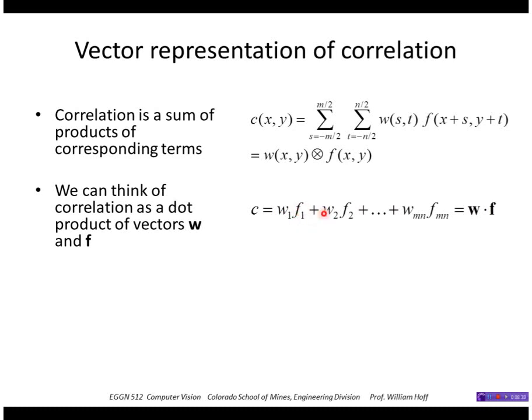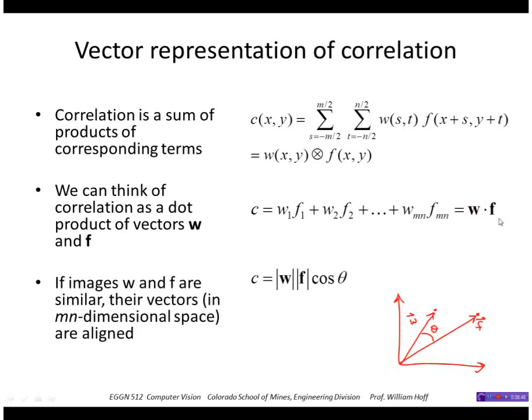And that's just a dot product in a high dimensional space. So if I think of the images w and f as vectors in a large dimensional space of size m times n, then this is the dot product of those two vectors.